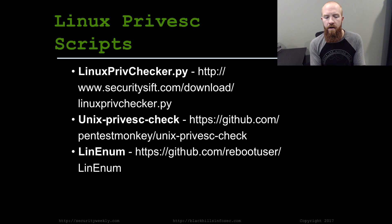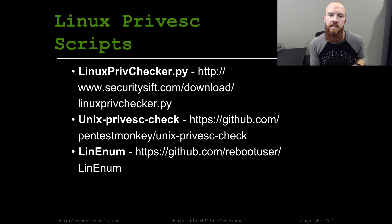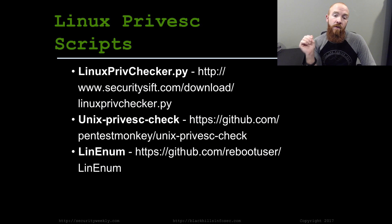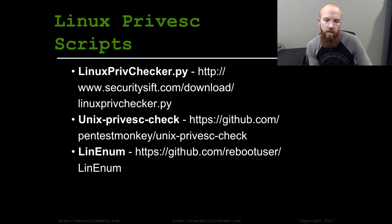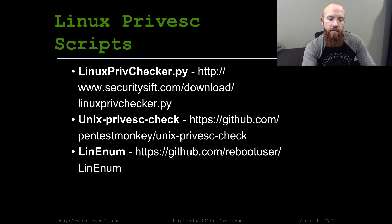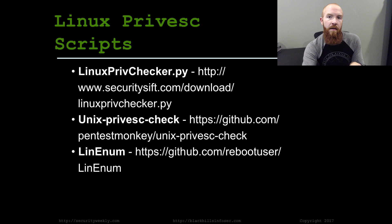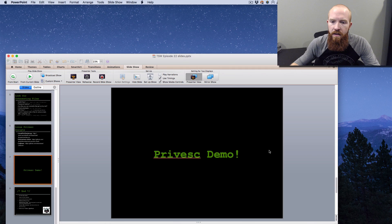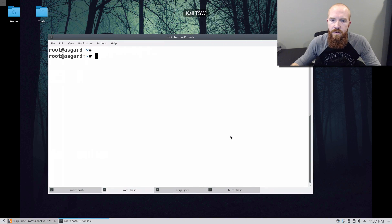There are scripts that will automate a lot of this. A lot of what I just described is manual poking around, but there are scripts available. Check out Linux Priv Checker — that's a really good one — Unix Privilege Check, and LinEnum. All three are very useful for finding various privilege escalation vulnerabilities and assisting you in figuring out where to look.